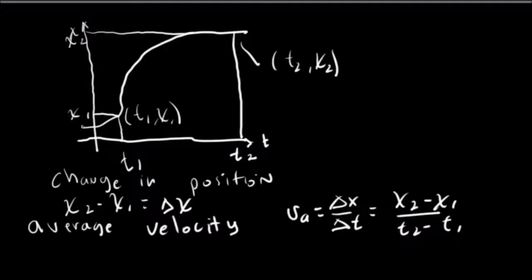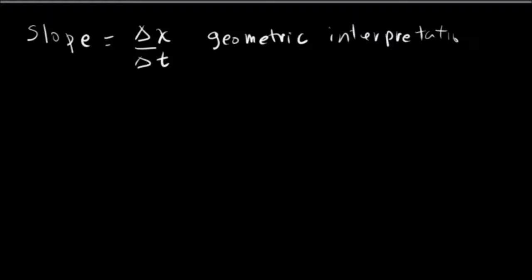Now let's go in and find another quantity. Let's define the slope. This is just back from math. It's the delta change in the x over delta t. And basically that's going to be a geometric interpretation of the slope, just by definition.